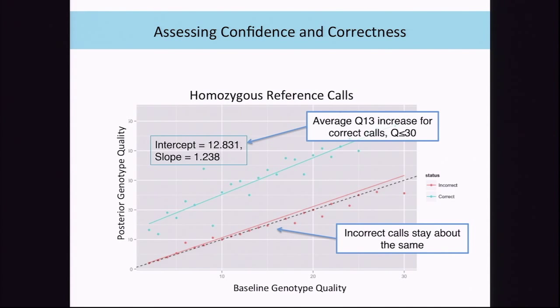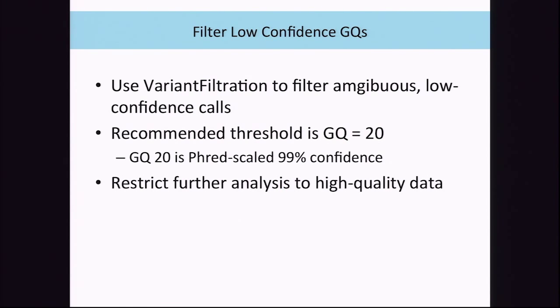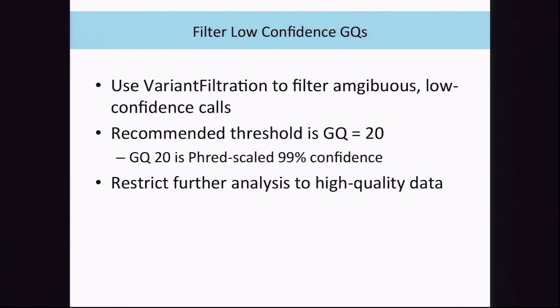Looking at each individual variant comparing baseline GQ with the posterior after applying family priors, we see about a Q13 boost for correct calls and no change for incorrect calls—these are homozygous reference calls, but we see similar results for other genotype classes. After applying priors and deriving posteriors, we filter out anything still low GQ using the variant filtration tool. The recommended cutoff is GQ20, which in Phred scale means we're discarding anything with a 1% or greater chance of being wrong—not good enough for downstream analyses.